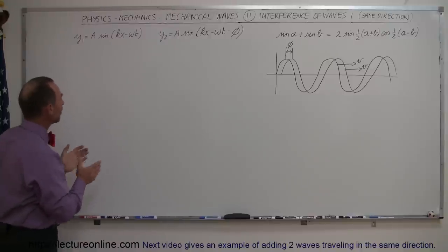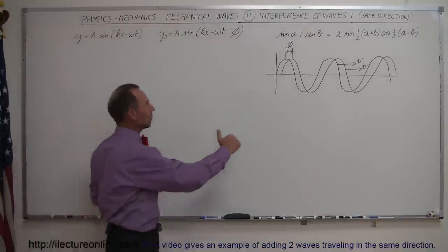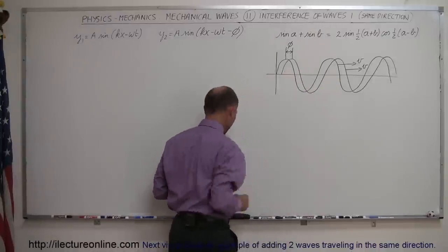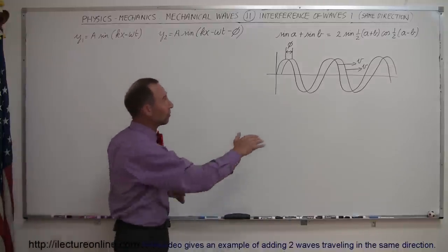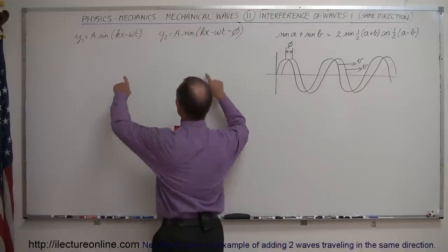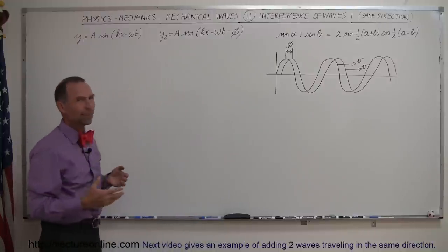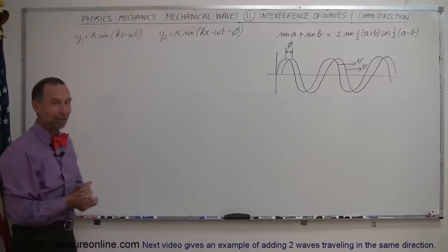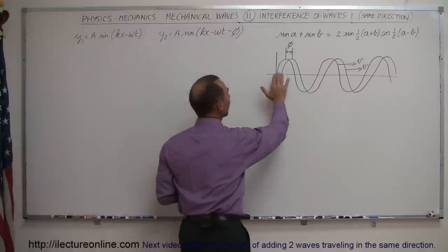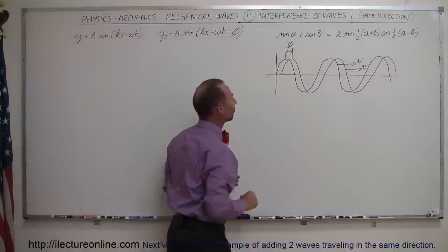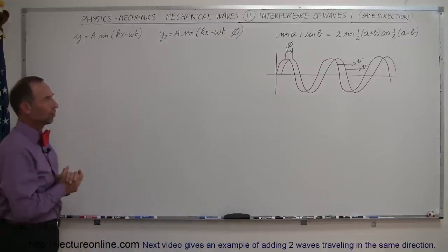Here I have two waves, Y1 and Y2. Y1 and Y2 are the displacement from the equilibrium point. The equilibrium point would be the horizontal axis, so it's displacement from the equilibrium point as a function of position and time. Both waves are moving to the right at the same velocity — I know that because they have the same K and the same omega, which gives them the same velocity. They even have the same amplitude. But they differ in that one wave is ahead of the other by a phase difference of phi, so the second wave is ahead of the first by a certain displacement.